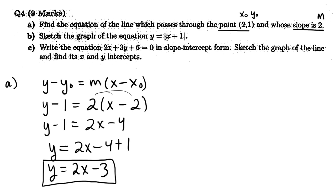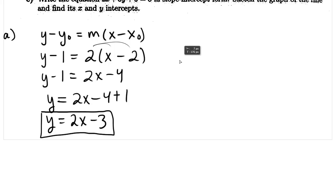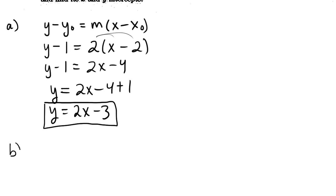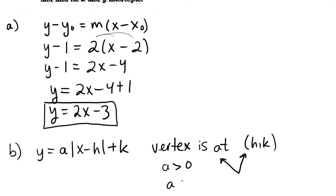The next one is graphing an absolute value equation. I'd like you to remember something. If you have an absolute value equation y = a|x - h| + k, the vertex is like the pointy part. Remember the absolute value graph looks like a V? The vertex is at (h, k). If a is positive, the graph opens upwards like that. If a is negative, the graph opens downwards.